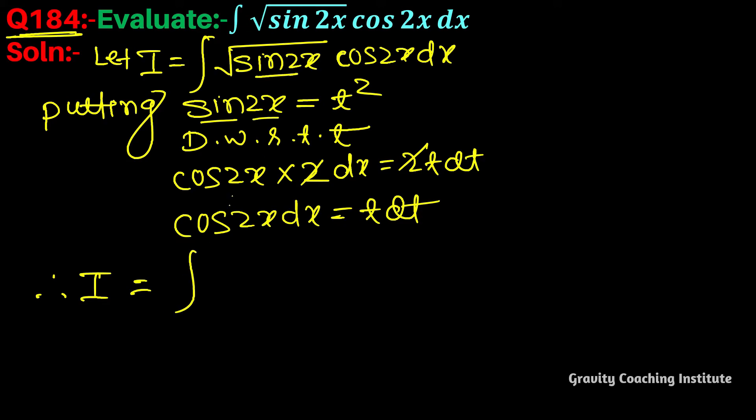Here we write t² times t, and cos2x dx becomes t dt, equal to ∫t² dt.